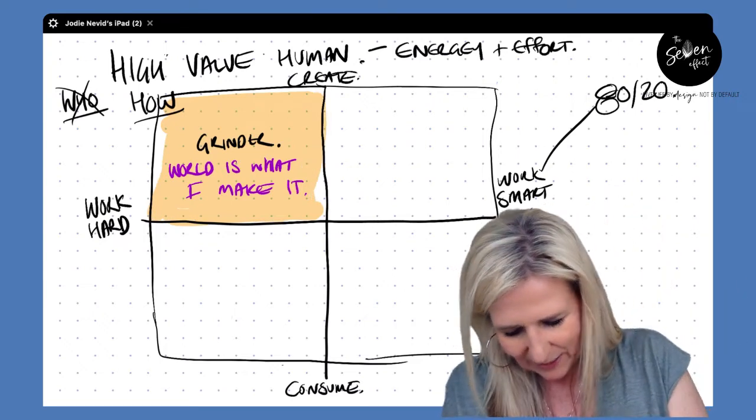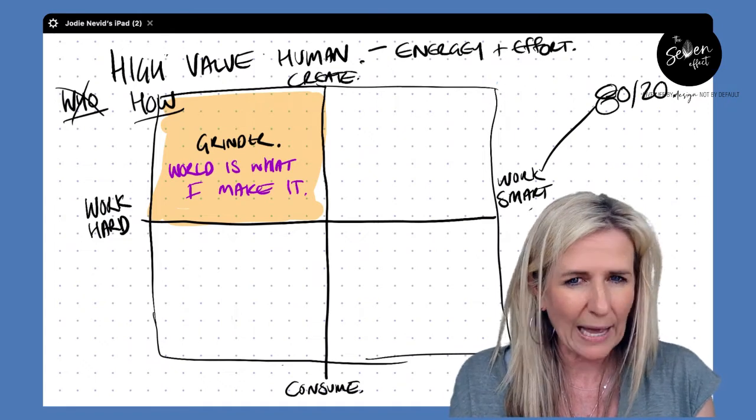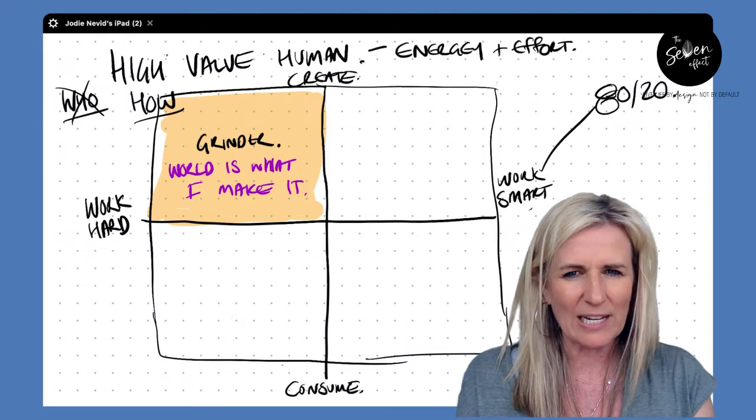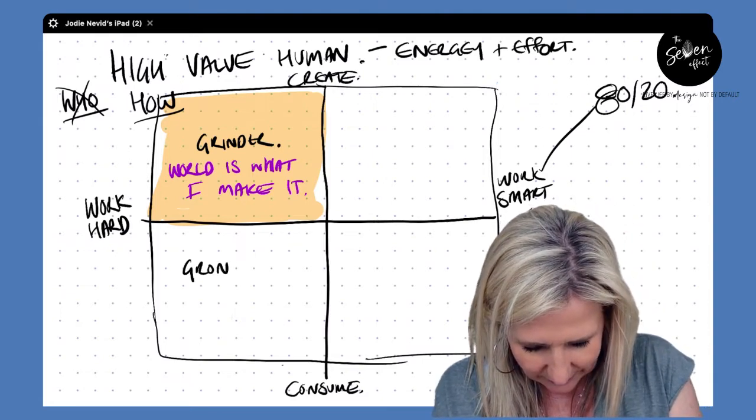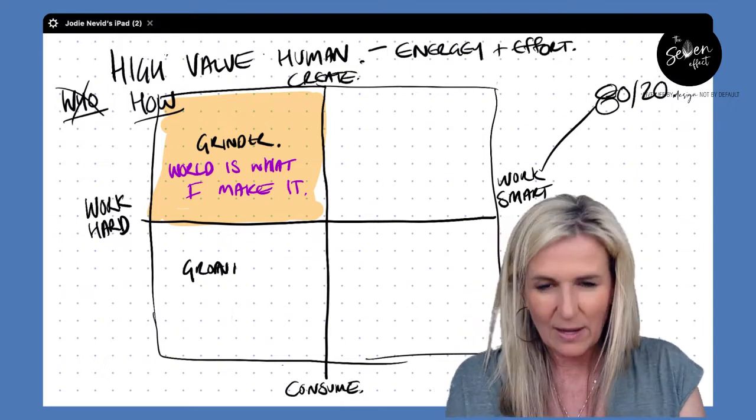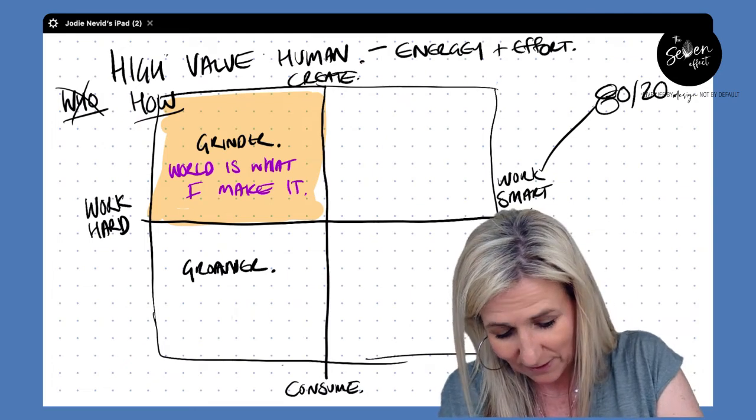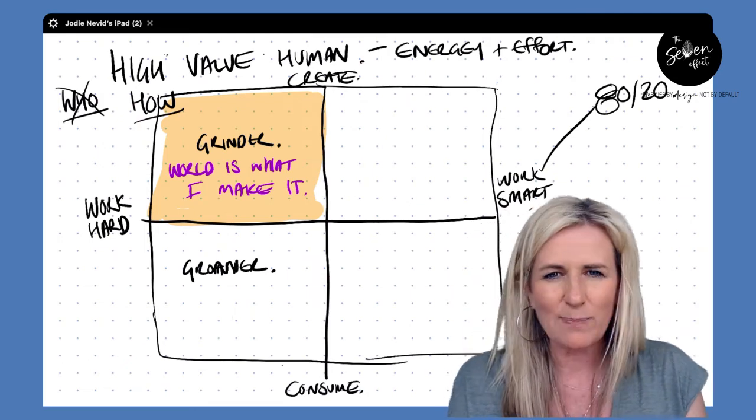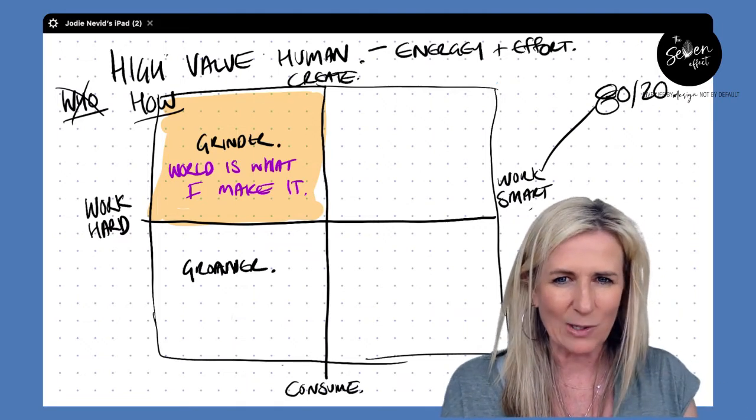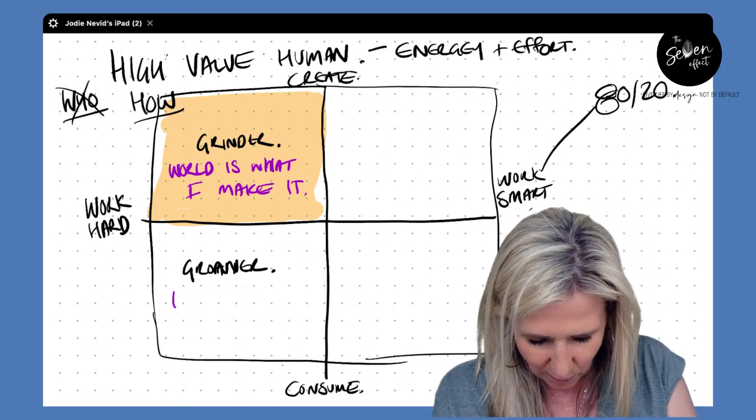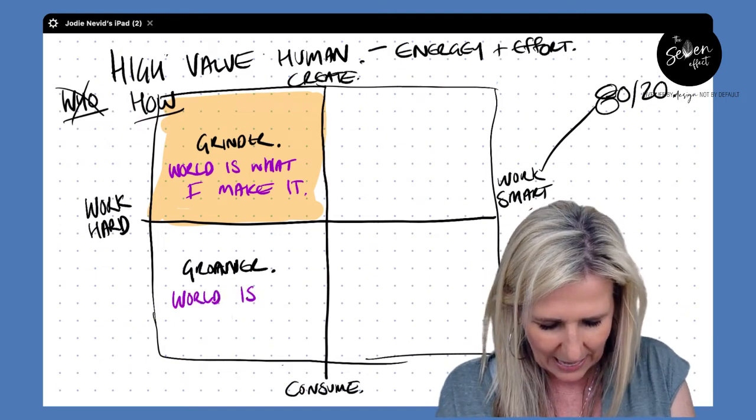So down here, like the grinders, this is a space where people will work hard, but they tend to consume more energy than they contribute. It's the groaner zone. And now the groaners aren't necessarily pessimistic or negative people. In fact, they're very lovely, kind people. And it's not even about people, as I said before, but spaces that we get into. But the problem in the groaner space is we get to the mindset where the world is hard.